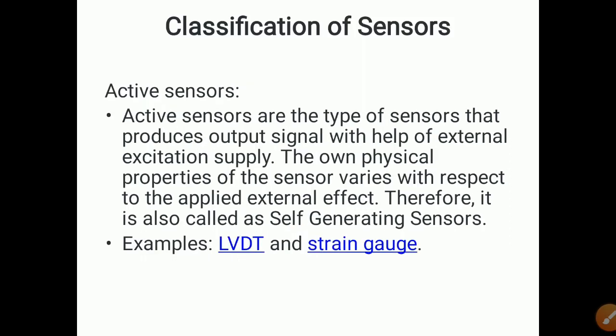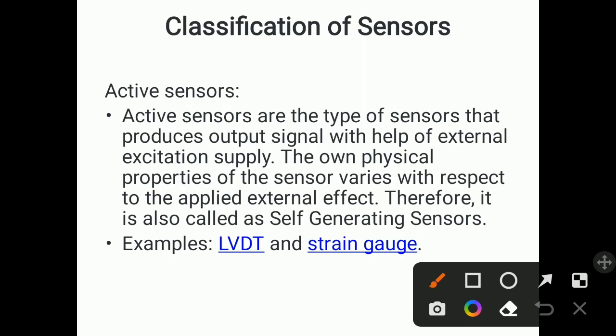Classification of sensors: sensors are classified into active and passive types. Active sensors are the type of sensors that produce an output signal with the help of external excitation supply — they require external power supply for their operation. The sensor's own physical properties vary with respect to the applied external effect, and therefore it is also called a self-generating sensor. Examples include LVDT and strain gauges.